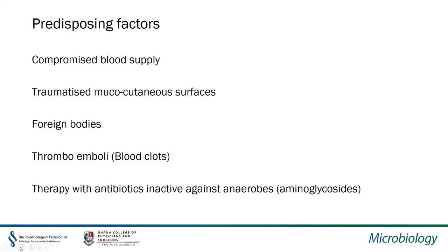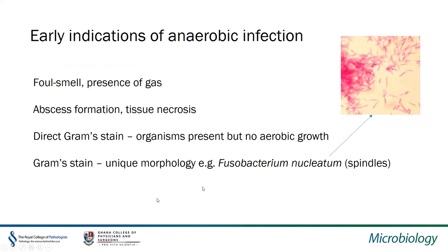Early indications of anaerobic infection include the foul smell and presence of gas. The foul smell is caused by fatty acids produced as a metabolic product of anaerobic bacteria. Abscess formation and tissue necrosis can be indicative, though not specific. More indicative is a direct Gram stain showing organisms present but no aerobic growth. Some anaerobic bacteria have unique morphologies — for example, Fusobacterium nucleatum with its distinctive spindle shapes on the Gram film.